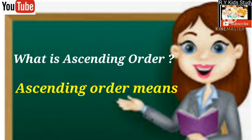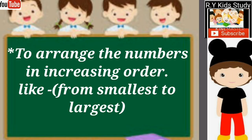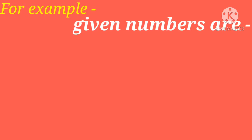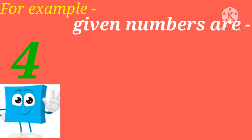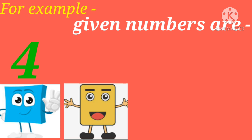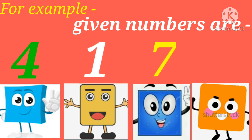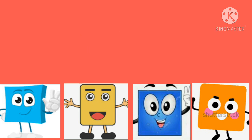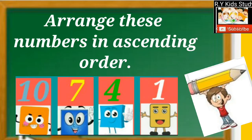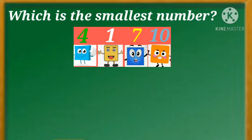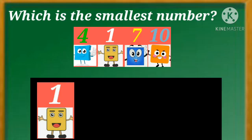What is ascending order? Ascending order means to arrange the numbers in increasing order, from smallest to largest. For example, given numbers are four, one, seven, ten — arrange these numbers in ascending order. Which is the smallest number? One is the smallest number.